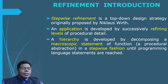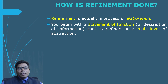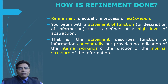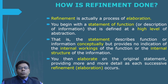How is refinement done? Refinement is actually a process of elaboration. You begin with a statement of function or description of information defined at a high level of abstraction. That statement describes functions or information conceptually but provides no indication of the internal working of the function or the internal structure of the information. You then elaborate on the original statement, providing more and more details as each successive refinement or elaboration occurs — meaning at every step you are refining things further.